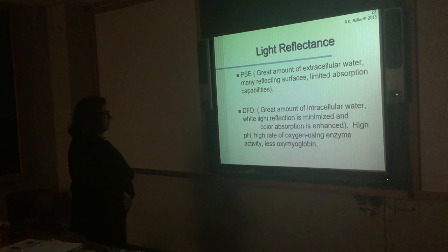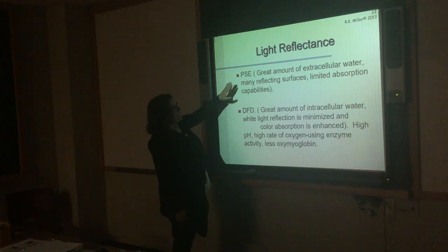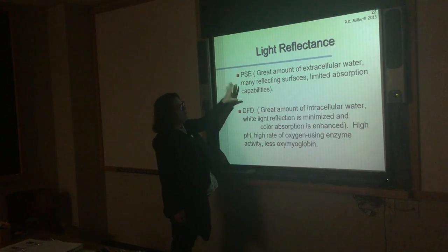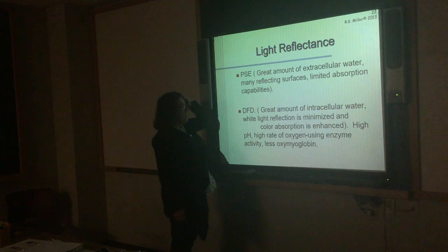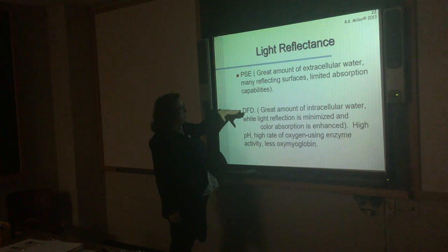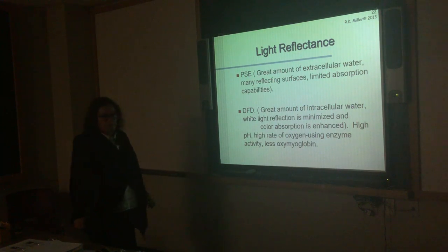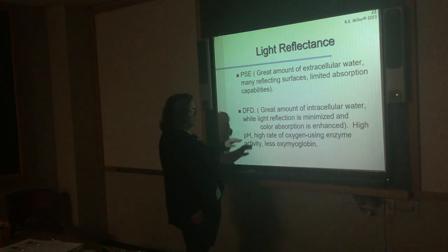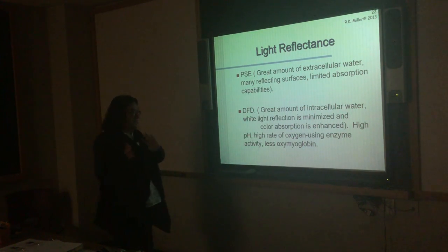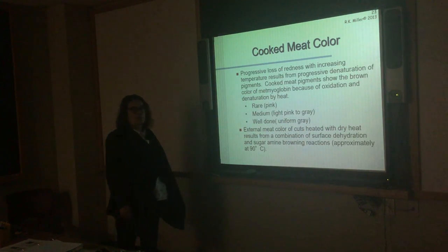PSE and DFD are related to pH. They don't really change the myoglobin per se — in PSE, with very rapid development of rigor and a big temperature spike, you can have some heat denaturation of myoglobin causing color to be a little lighter in extreme situations. But the PSE and DFD issue is primarily related to light reflectance and free water, not just myoglobin. I just wanted to bring that in so you don't confuse those.